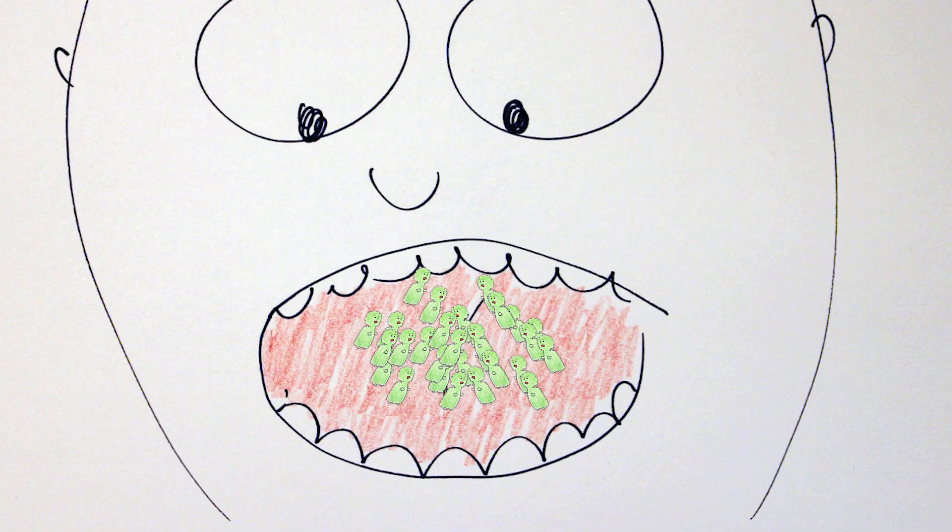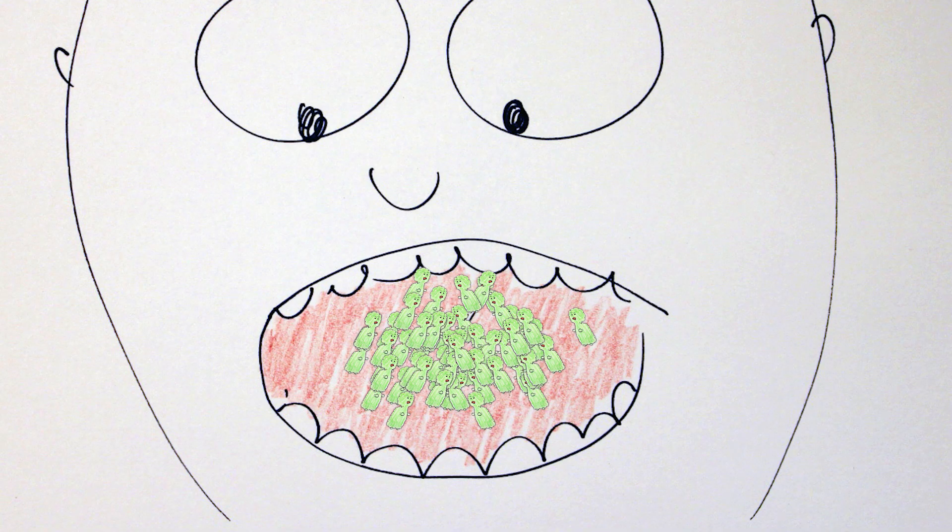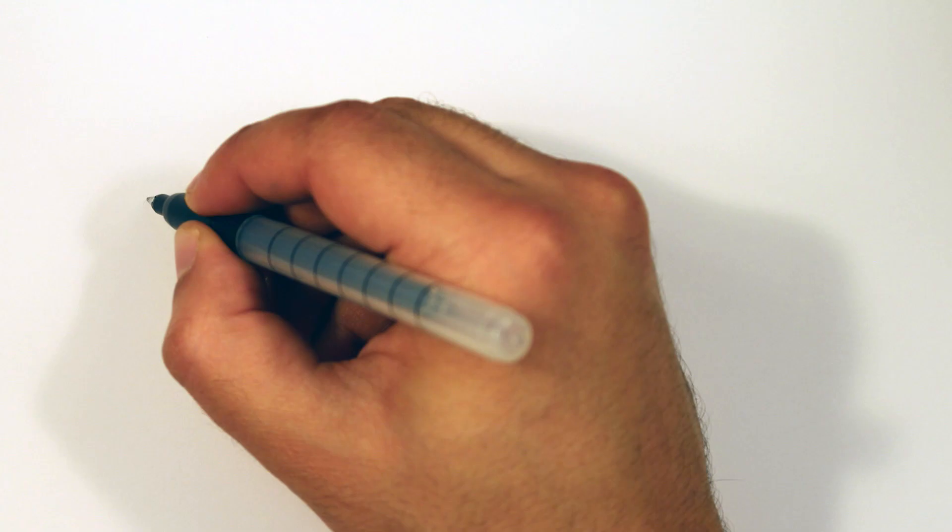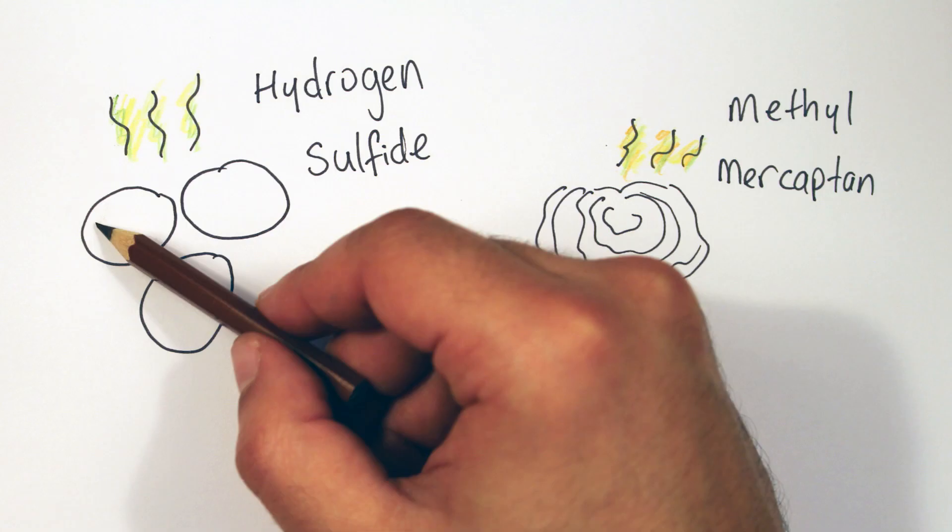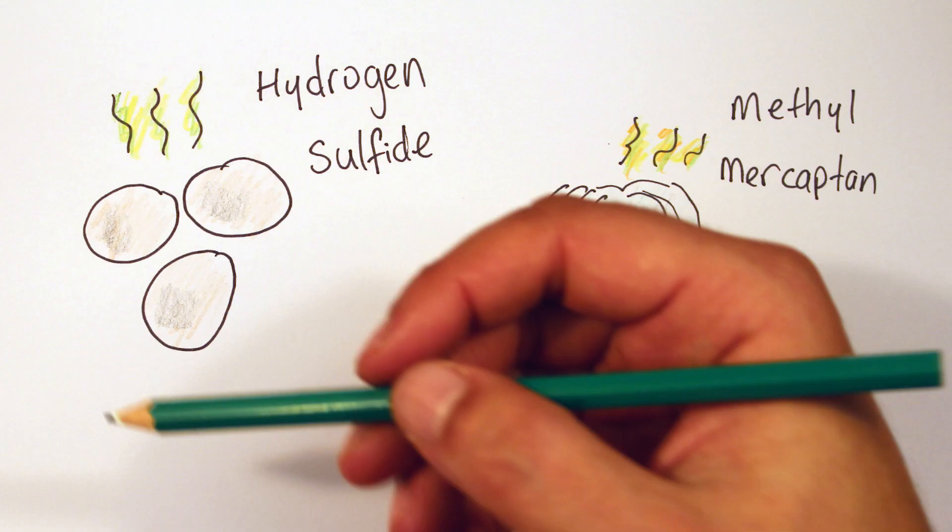Our mouth is home to hundreds of millions of bacteria. They feast on food leftovers and tissue in our mouth, producing foul-smelling chemicals such as hydrogen sulfide, which smells like rotten eggs, and methyl mercaptan, which smells like rotten cabbage.